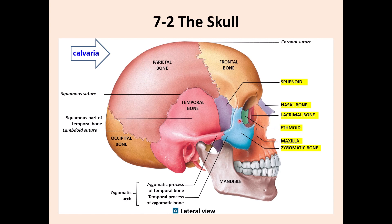This is the orbital cavity where the eye is located. Medially you have the ethmoid bone; anterior to that is the lacrimal bone; anterior to that is the maxilla, which is the upper jaw. Here is the nasal bone, which makes the upper part of the nasal cavity. The mandible forms the lower jaw.